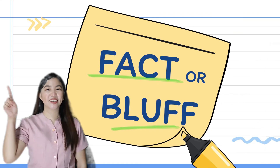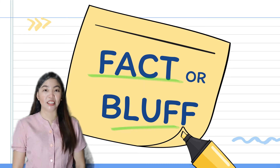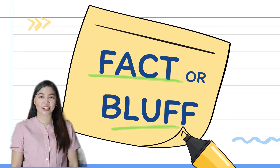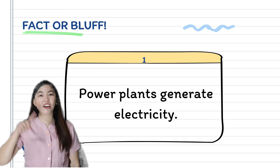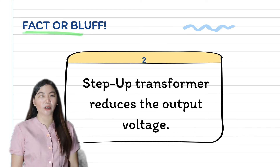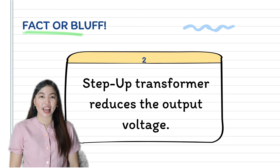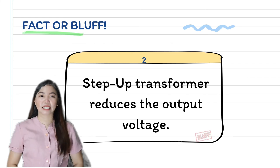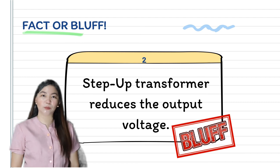Okay, let's start. This is fact or bluff. Say fact if the statement is correct, and bluff if it is wrong. First: power plants generate electricity — fact or bluff? Very good, it's a fact. Next: step-up transformer reduces the output voltage — fact or bluff? Very good, it's a bluff. Step-up transformer increases the output voltage while step-down transformer reduces the output voltage.